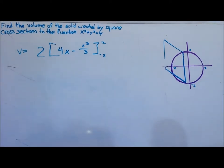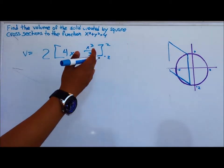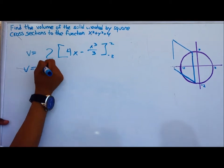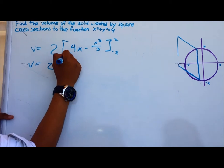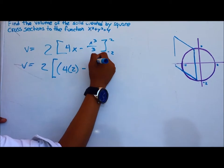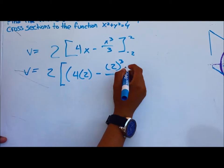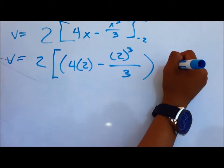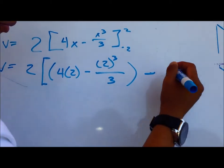So here, now we have just basic evaluation and plugging in the numbers. So you would have 2 times 4 times 2 minus 2 cubed over 3 minus the lower bound.